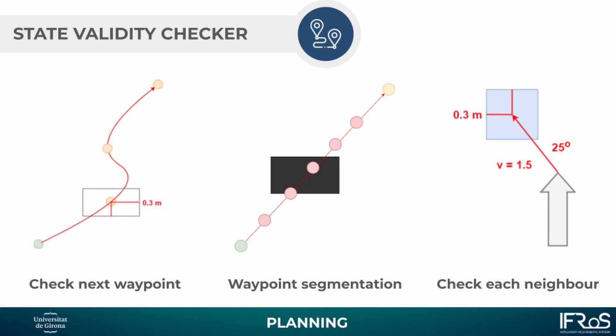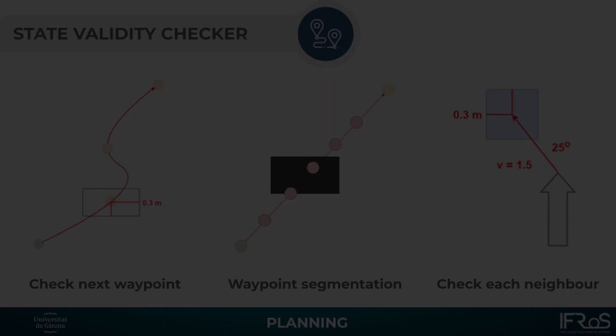We have also implemented 3 types of state validity checkers for obstacle avoidance. We check the next waypoint, we do the waypoint segmentation, and then we check each neighbor in the Hybrid A* and we open a window of 0.6 meters in diameter to check for obstacles.